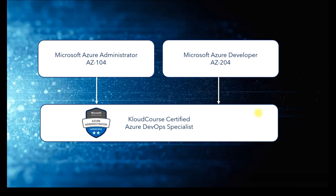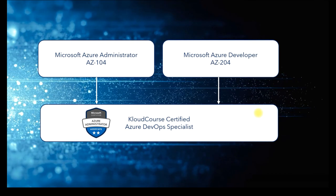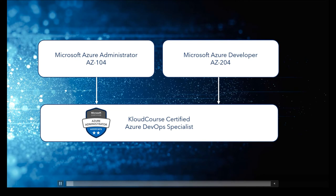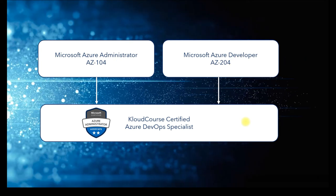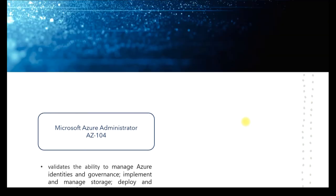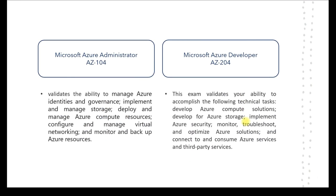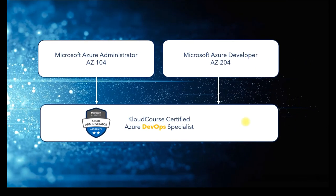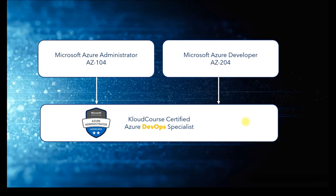To get trained on Azure DevOps Specialist or Azure Certified DevOps Engineer, you either start with AZ-104 or AZ-204 — meaning you must be certified in either AZ-104 or AZ-204 as a mandatory prerequisite from Microsoft. AZ-104 is about managing Azure identity and governance, implementing and managing storage — essentially administering Azure infrastructure services including compute, networking, storage, monitoring, access control, and security. AZ-204 is about developing applications using the Azure cloud platform — AZ-204 is for developers, AZ-104 is for administrators. Once you complete either, you can start the Azure DevOps training and certification program.